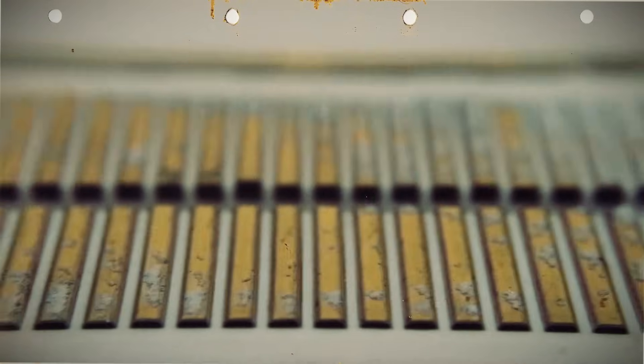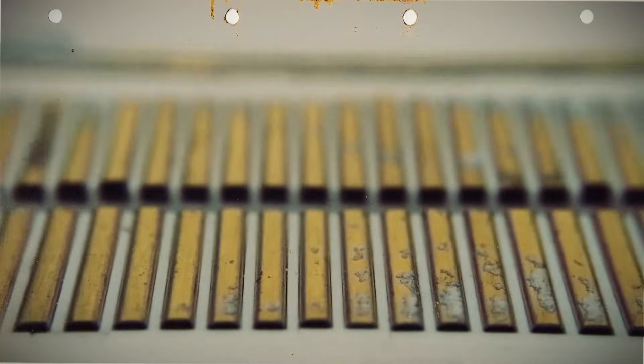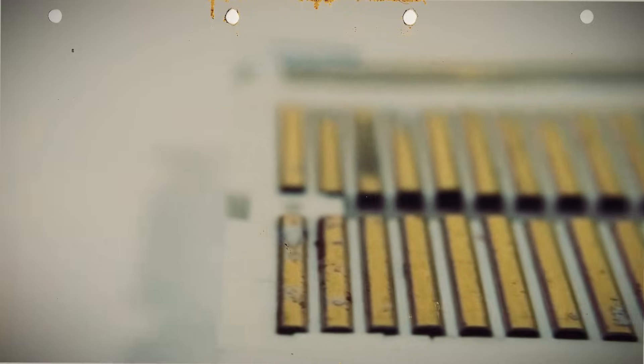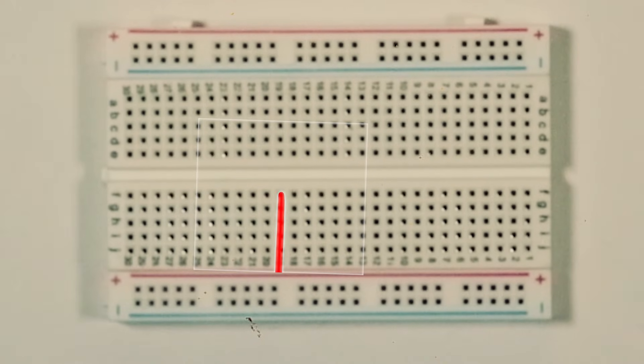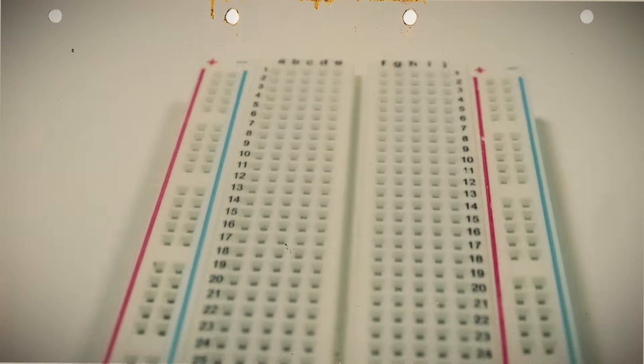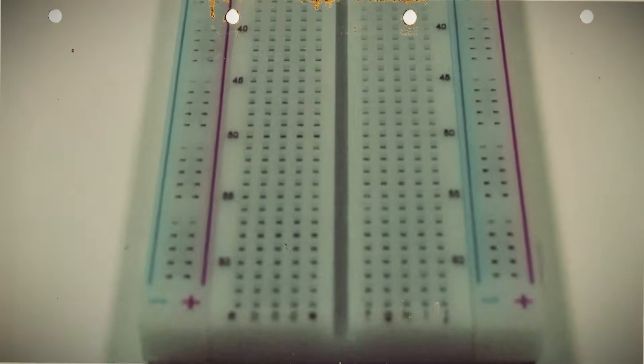Again, taking off the back of the breadboard, you can see how the metal strips connect each column of holes. So while these holes are connected to each other, these holes are not. You'll also notice this big split in the board separating it into two equal sides.